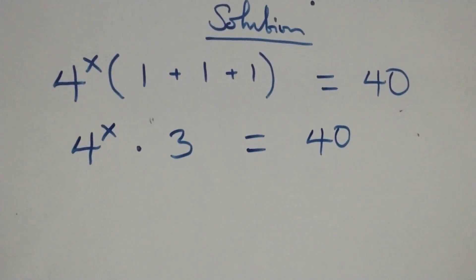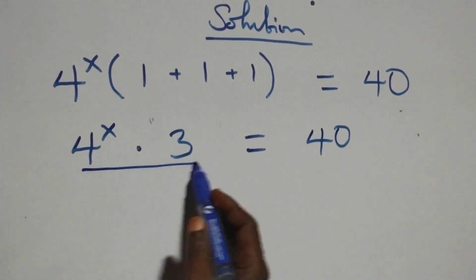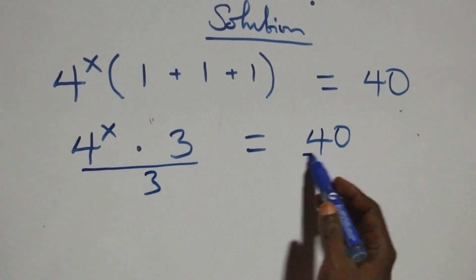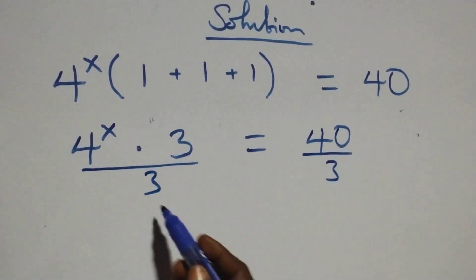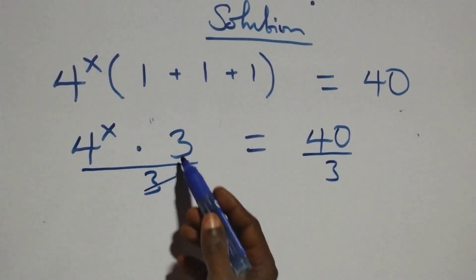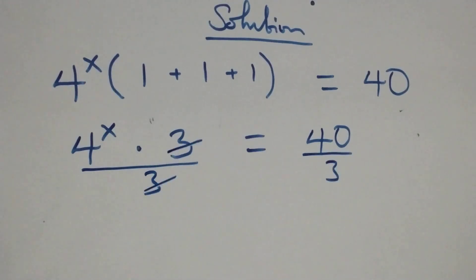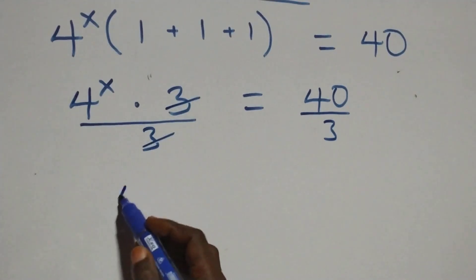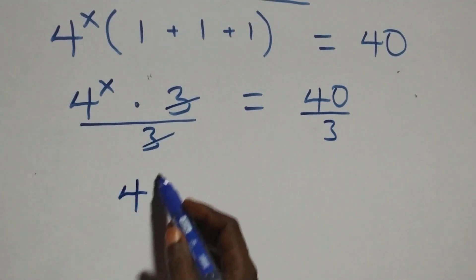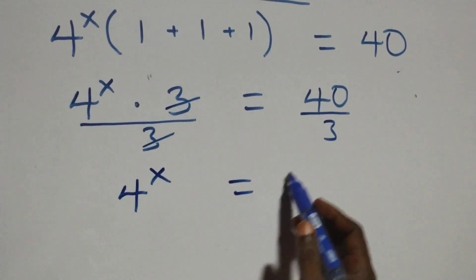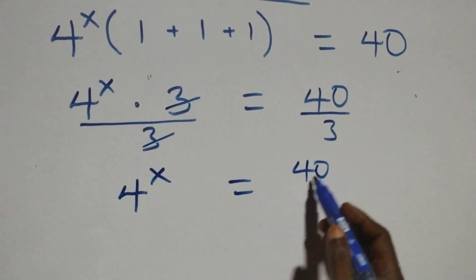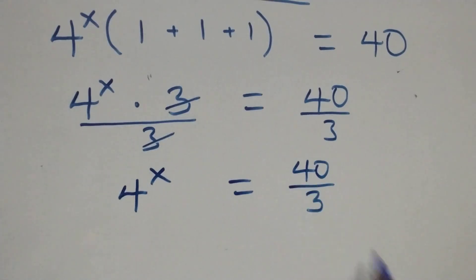The next step here, we divide both sides by 3. We divide this side by 3 and also divide this side by 3, which implies that 3 cancels, and we have 4 raised to power x equals to 40 over 3.